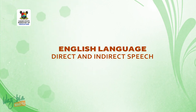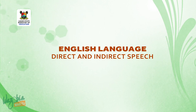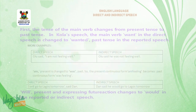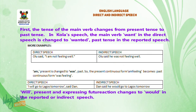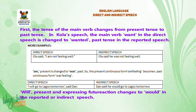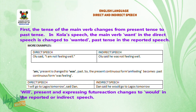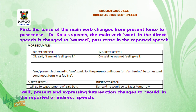Welcome back. The next stage is to examine the change of verbs in the indirect speech. First, the tense of the main verb changes from present tense to past tense. In Kola's speech, the main verb 'wants' is changed to 'wanted' — past tense — in the reported speech.